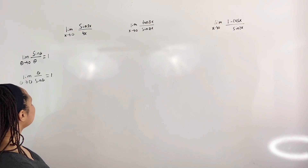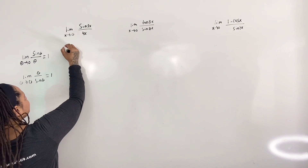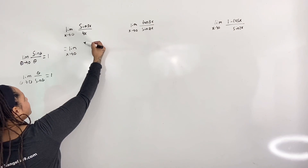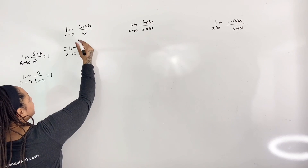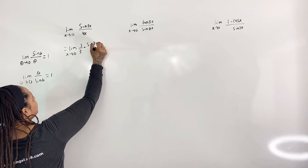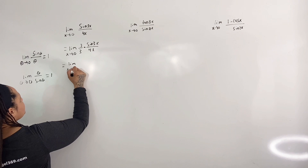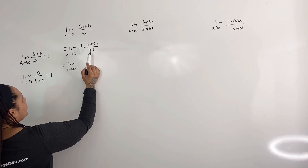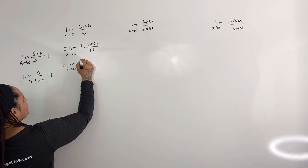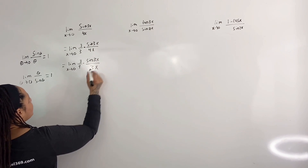We want to evaluate the limit as x approaches 0 of sine of 3x over 4x. This is equal to the limit as x approaches 0 — I'm going to multiply the top and the bottom of this fraction by 3, so this will be 3 over 3 times sine of 3x over 4x. Now I'm just going to exchange the 4 and the 3, writing the 4 here and the 3 here.